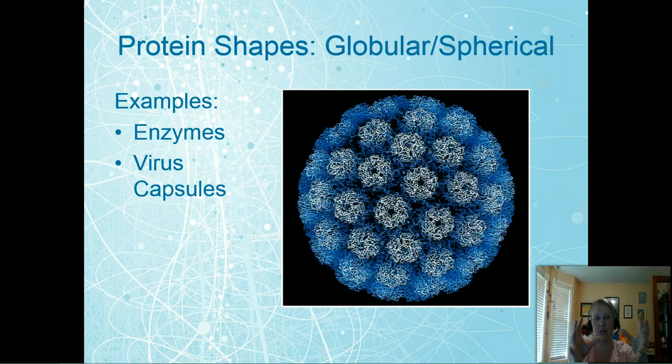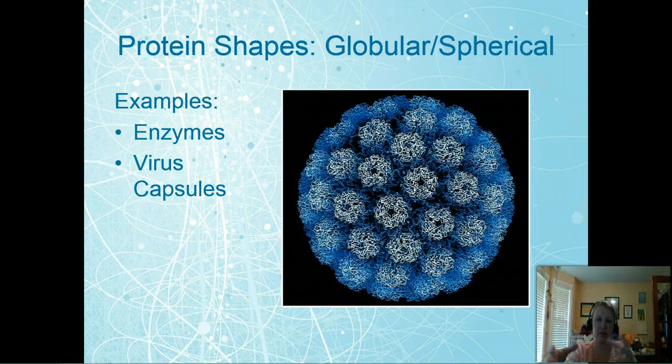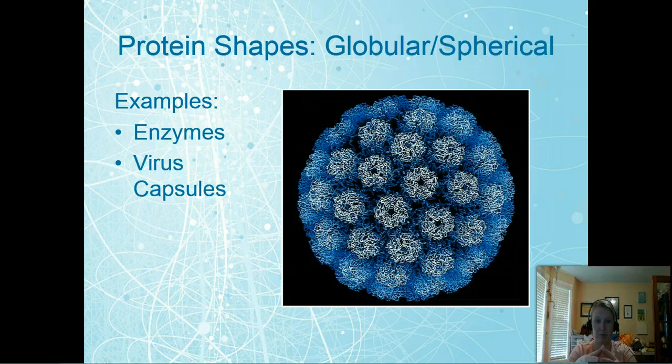So globular proteins, we think about these with enzymes and virus capsules. Virus capsules are highly organized. Enzymes are not always as organized. But the enzymes tend to be more globular and the spheres tend to be more symmetrical and more viral capsid shaped. And so this is a good example of them. You can see an example here of this virus and how organized it is.